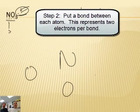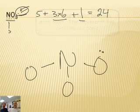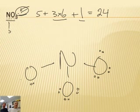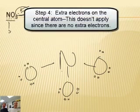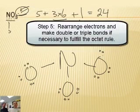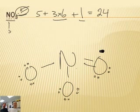So we got 24 to spend. Nitrogen looks like it'll go in the middle, nitrogen's by itself, then three O's. Let's spend: two, four, six, eight, ten, twelve, fourteen, sixteen, eighteen, twenty, twenty-two, twenty-four.